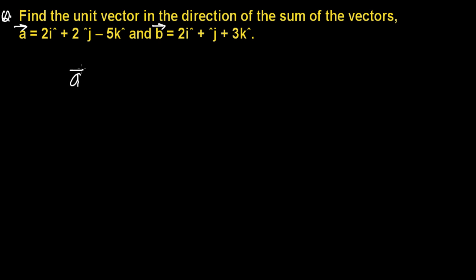Let me first write vector a, which is 2i cap plus 2j cap minus 5k cap. And another vector we have is b, which is 2i cap plus j cap plus 3k cap. So these are the two vectors.